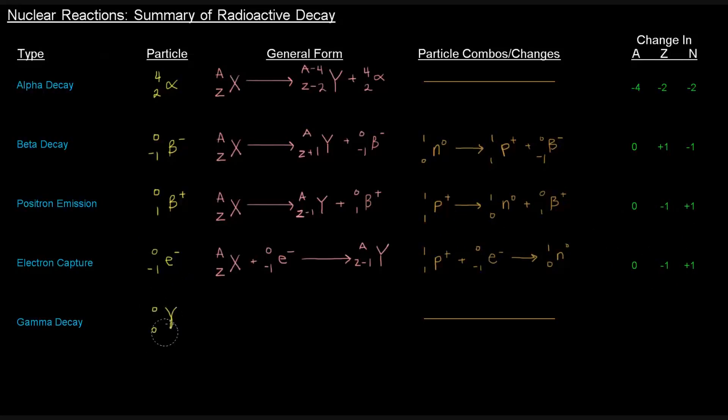With gamma decay, we have 0, 0 for the mass number and atomic number respectively. Gamma decay is basically just energy. We go from a high energy excited nucleus to a more stable one, and this usually accompanies one of the other types of decay. No particle combinations or changes are happening, and there's no change in the A, Z, or N.